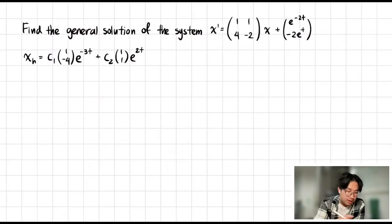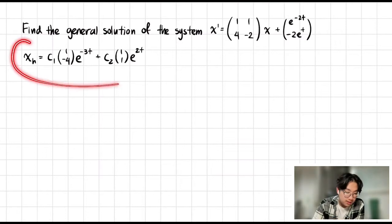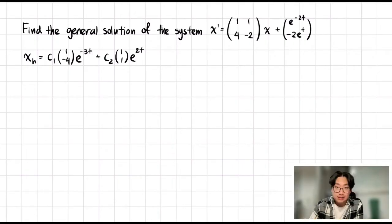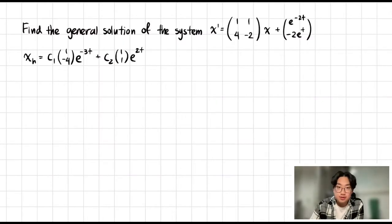So from the previous video, we know that the solution to the homogeneous system is c1 times this vector times e to the negative 3t, plus c2 times this vector times e to the 2t. With this, we can quickly derive something called the fundamental matrix, which we will use quite frequently, especially in this case for variation of parameters, which is the main topic of this video.